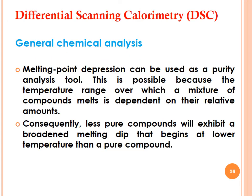General chemical analysis can also be done by DSC. Melting point depression can be used as a purity analysis tool, since the temperature range over which a mixture of compounds melts depends on their relative amounts. With impurities, the melting point decreases. Consequently, a less pure compound will exhibit a broadened melting dip that begins at a lower temperature compared to a pure compound, allowing purity determination based on melting point comparison.